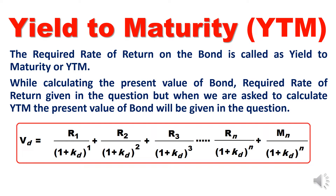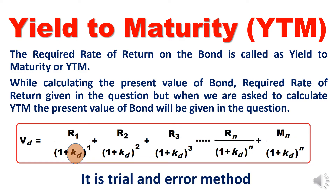If you apply the valuation formula: Value of debt (Vd) equals R1 divided by (1 + Kd) to the power of n, continuing till the nth maturity year. In bond valuation we calculate Vd, but here we must calculate Kd, the required rate of return — also called YTM or IRR. The calculation of Kd is always a trial and error method.